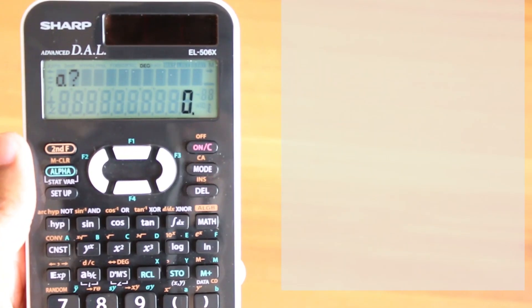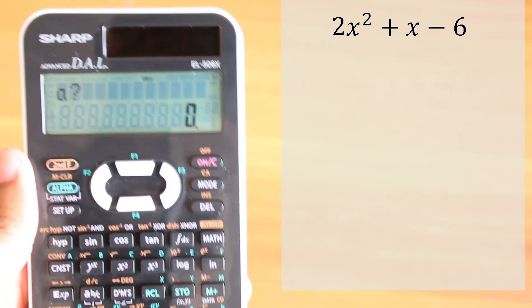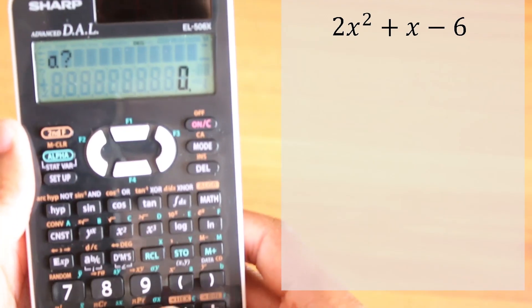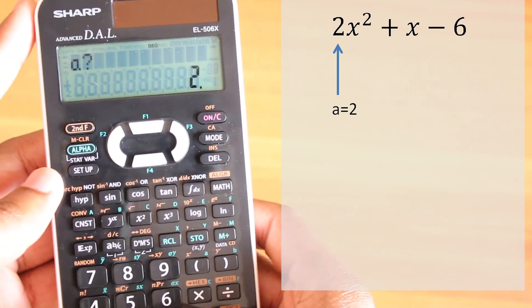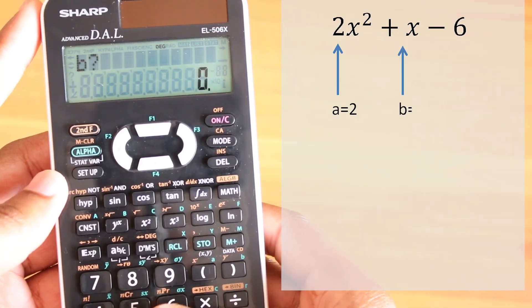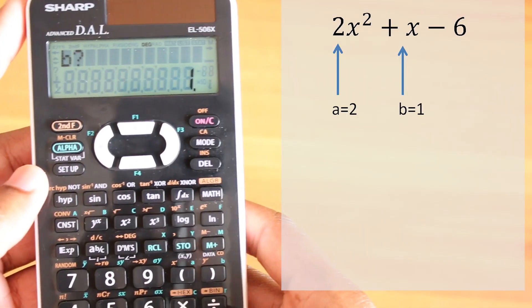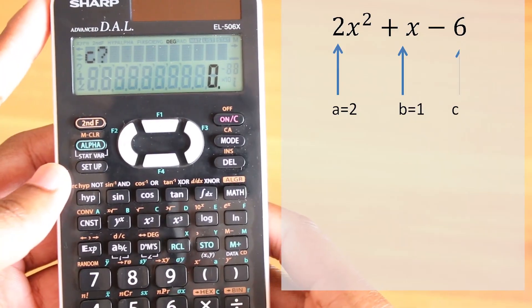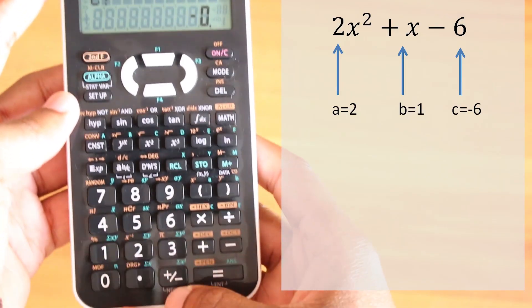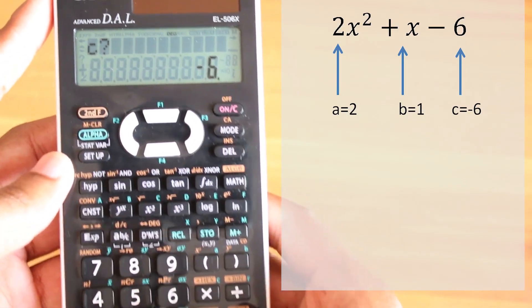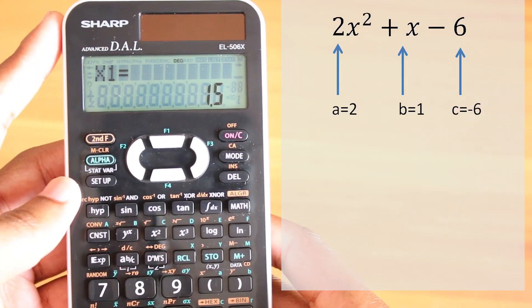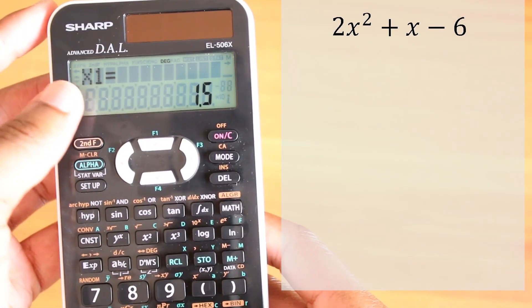So for example, if you have a quadratic equation like 2x² + x - 6, a would be 2, so I'll press 2, press equal or enter. I will press 1 for b, press enter. And for c I will press negative—I use this symbol for negative—negative 6. And this gives me my answer straight away. The first x value is going to be 1.5.